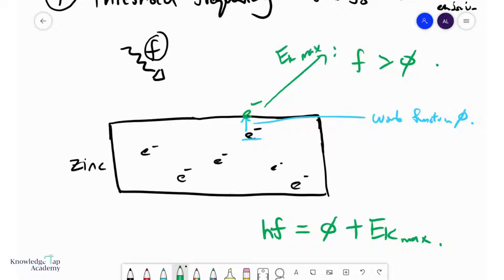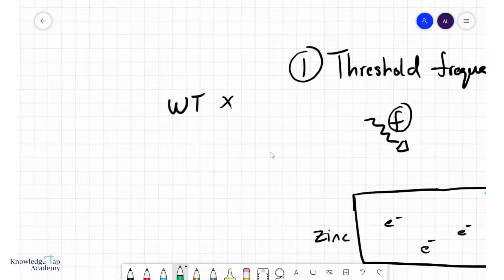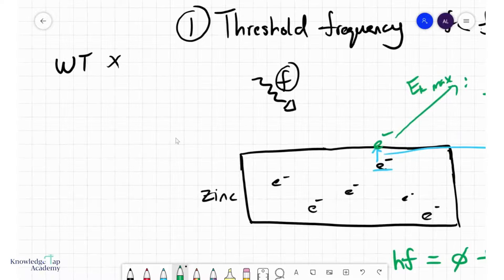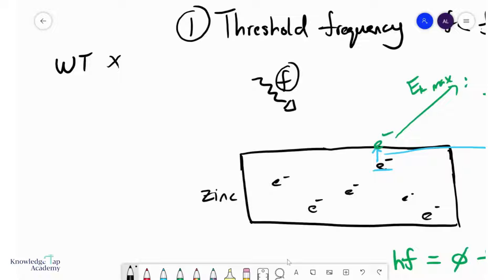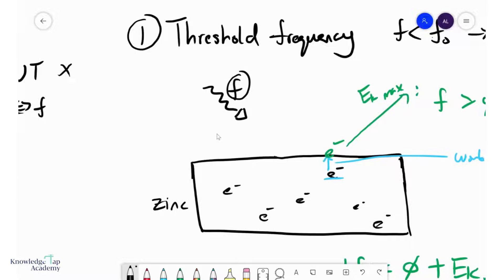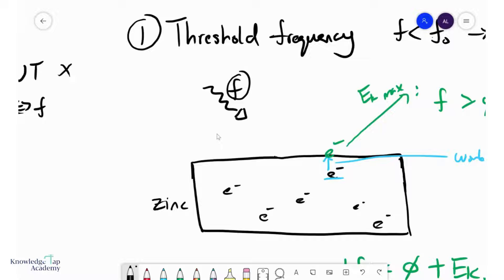So let us now understand why this observation shows that wave theory is incorrect. Well, first of all, wave theory says that there is no relationship between energy and frequency, but here it was seen that frequency was the sole thing that decided whether or not you would emit or not. So clearly it shows there's some relationship between energy and frequency, which of course we know is E equals hf.